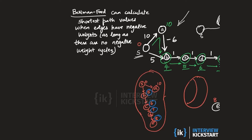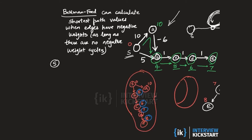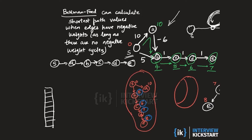So what makes Bellman-Ford work here? We know the shortest path from s to vertex e goes: s → a → b → c → d → e. Bellman-Ford starts by initializing all shortest path values in the leftmost column to infinity, except for the source, whose shortest path value from itself is 0. That's what we did in the leftmost column.